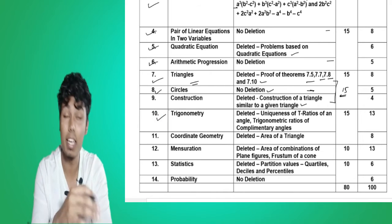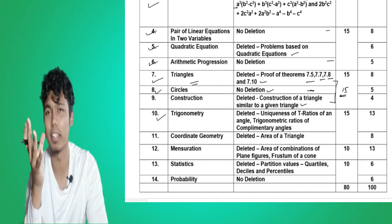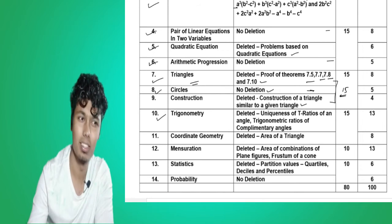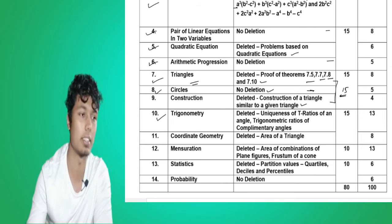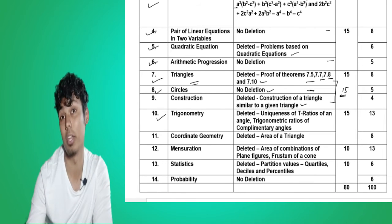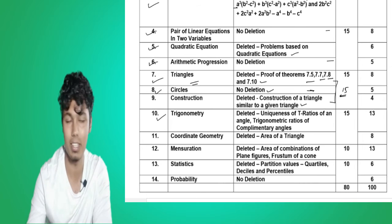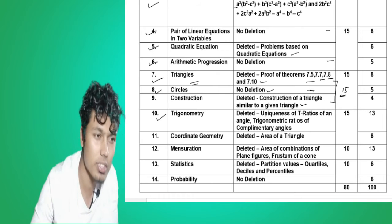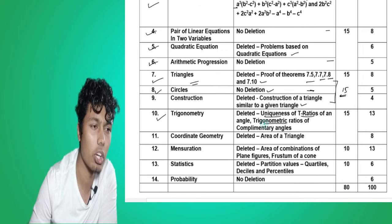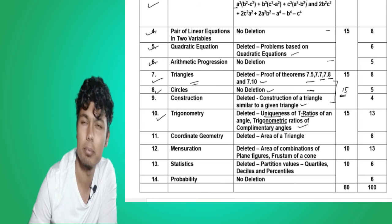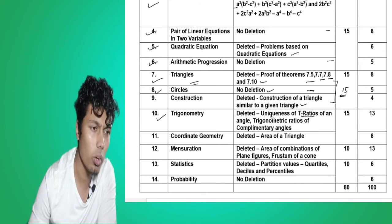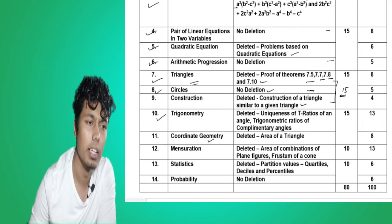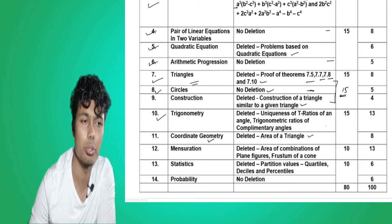Chapter number ten: Trigonometry — it is one of the most important chapters. It is very important because if you happen to take science in higher classes, trigonometry will not leave your sight. From chapter number ten there are some deletions like uniqueness of T-ratios of an angle, and trigonometric ratios of complementary angles — all these things are deleted from trigonometry. Chapter number eleven: Coordinate Geometry — the deleted portion is area of a triangle from coordinate geometry. These two topics are deleted from their respective chapters.